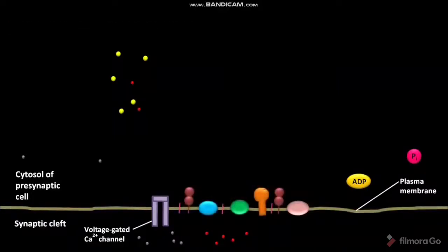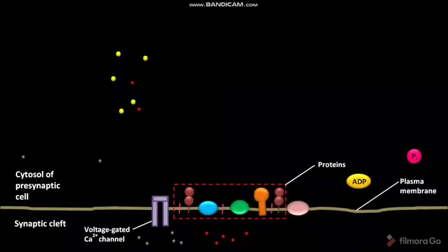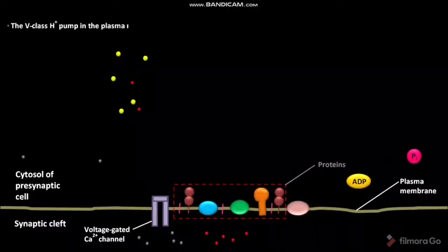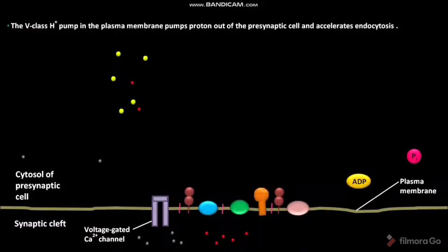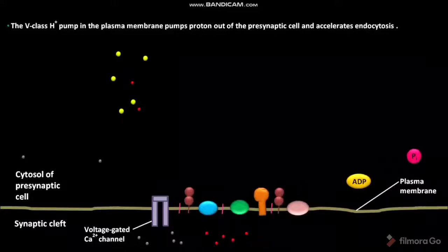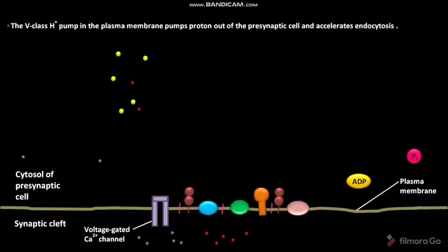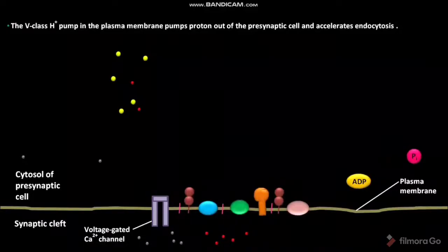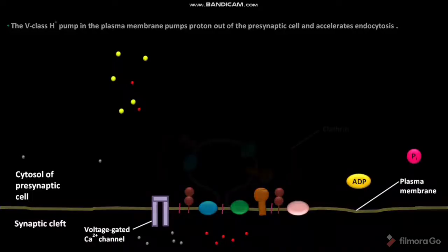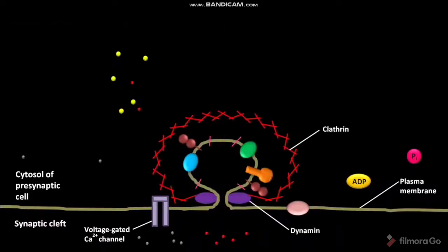After exocytosis, all the proteins previously on the membrane of the uncoated synaptic vesicle can be seen on the plasma membrane of the presynaptic cell. The V-class proton pump in the plasma membrane pumps protons out of the presynaptic cell and accelerates endocytosis. The clathrin-coated vesicle containing VAMP, neurotransmitter transporter proteins, and synaptotagmin buds inward.